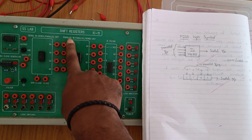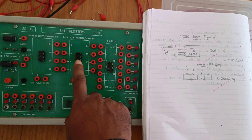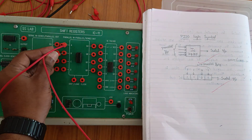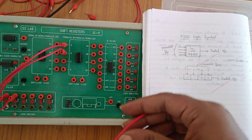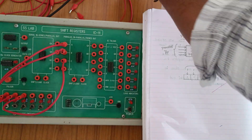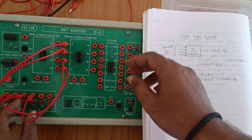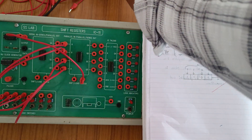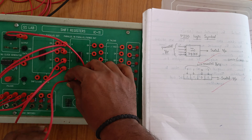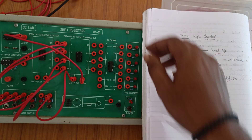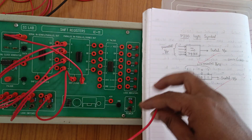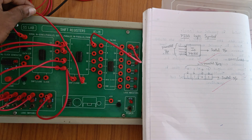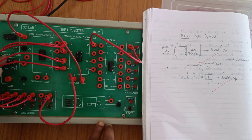The next register is parallel in serial out, and parallel in parallel. While doing parallel operations we have to use this IC. All inputs are connected in parallel at a time. Clock is connected to the clock generator. While doing parallel operations, put the shift load as one always. For parallel in serial out, we have to connect single serial output.